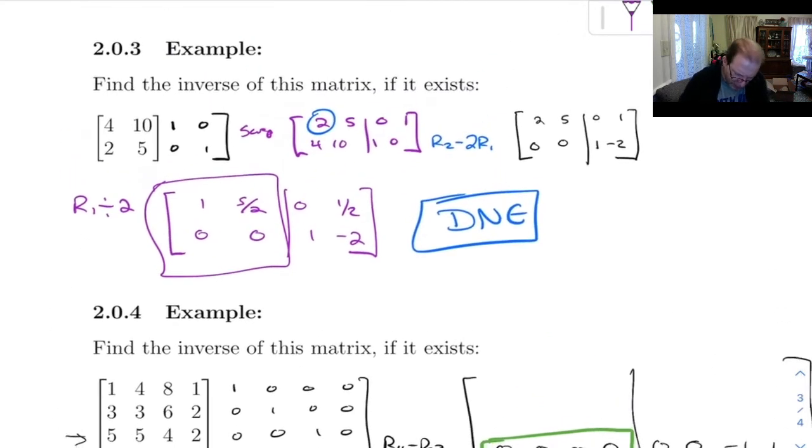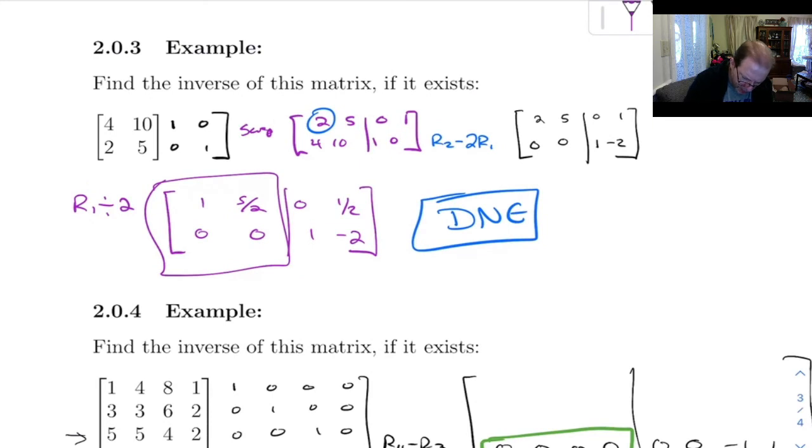So let's scroll back up for a second. On this example, we had 4, 10, 2, 5. Notice one row is a multiple of the other. If you take 2, 5 and double it, you get 4, 10.